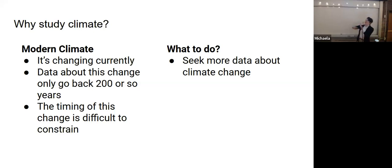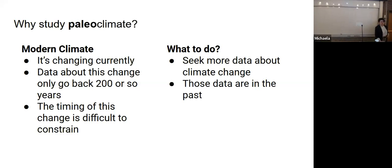What do we need to do? We need more data about climate change. But using the case of modern climate change, we only have 200 years of data. What I do is I look to the past. The Earth's climate has changed many times throughout its history for various reasons. If you're looking for more data about climate change, you have to look to the past. I study paleoclimate, the climate of the past.